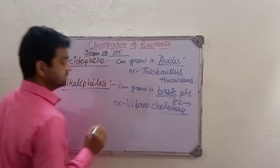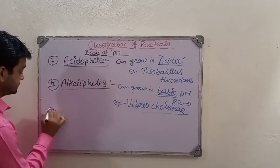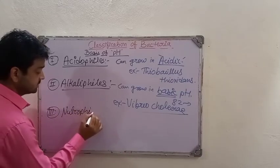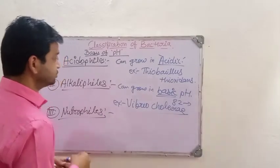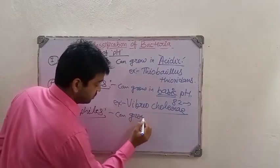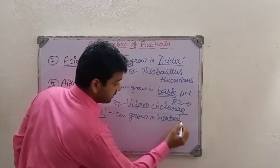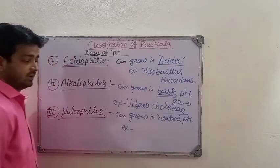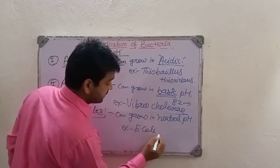The third type on the basis of pH is neutrophiles. Neutrophiles, as the name indicates, can grow at neutral pH. The example for neutrophiles is E. coli.